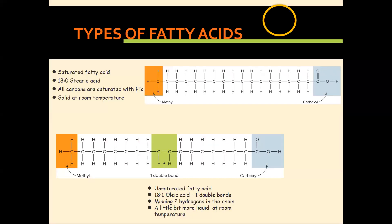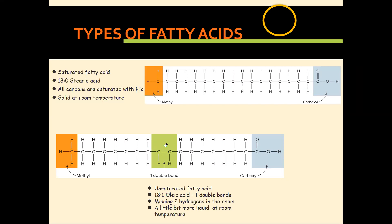A saturated fatty acid has no double bonds — for example, stearic acid, which has 18 carbons, all saturated with hydrogens. Saturated fatty acids are solid at room temperature. A fatty acid has a methyl group and a carboxyl group. A monounsaturated fatty acid has one double bond between carbon atoms — for example, oleic acid, also 18 carbons with one double bond. Because of that double bond it is slightly more liquid at room temperature compared to saturated fatty acids.